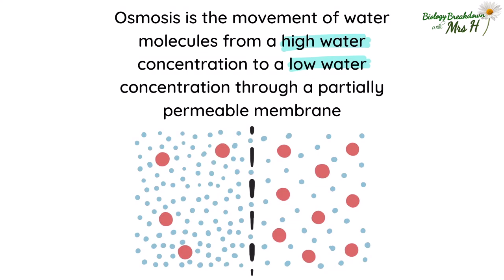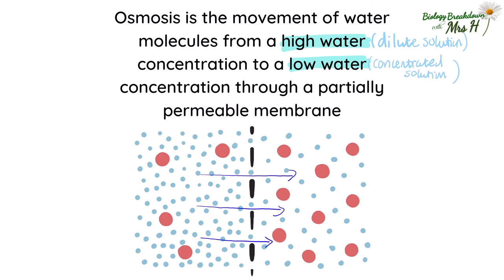When you answer osmosis questions, it is easier to use this set phrase in your answer, but make sure you say 'water concentration' — if you leave the word 'water' out then your answer will be ambiguous. Osmosis is the movement of water molecules from a high water concentration to a low water concentration through a partially permeable membrane. Leaving out the word 'water' implies concentration of solute. You could alternatively write 'from a dilute solution to a more concentrated solution,' but I suggest just sticking with the definition.